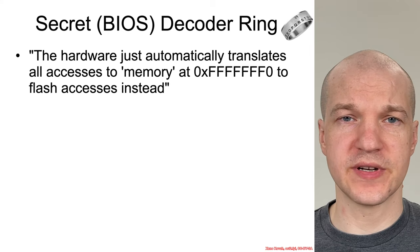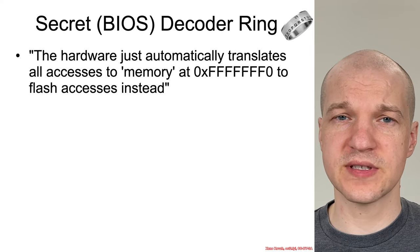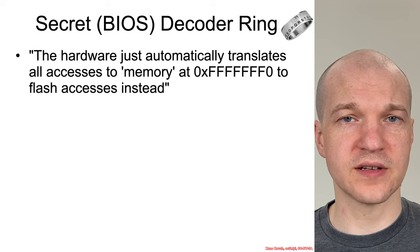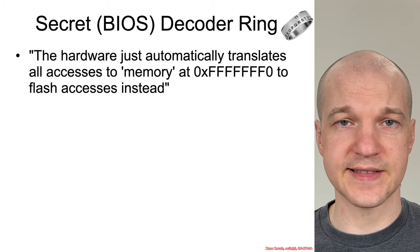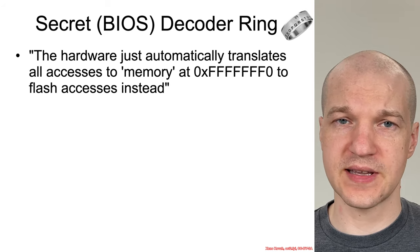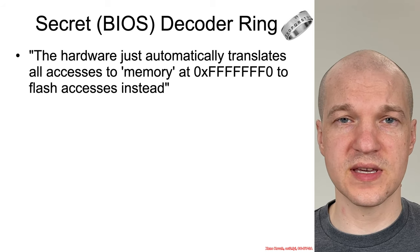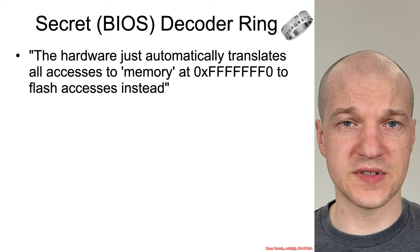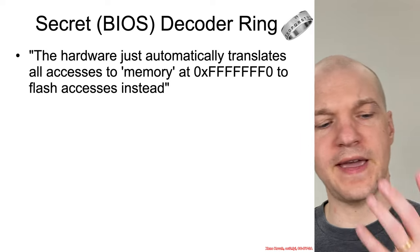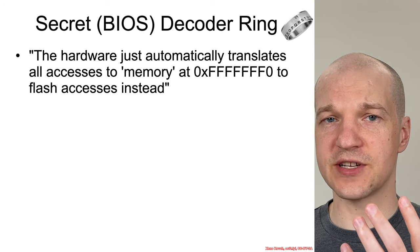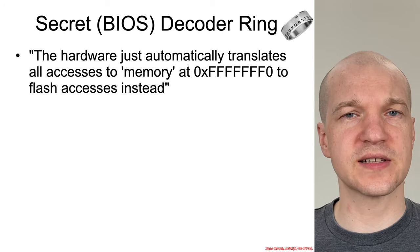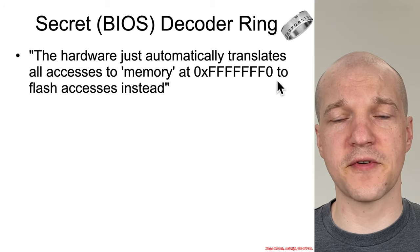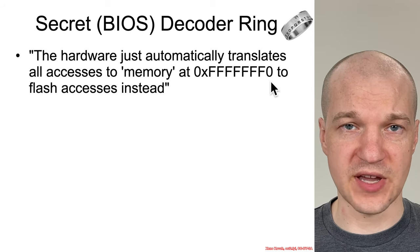At the very beginning of the class, when we were talking about attacker motivation, we said that BIOS lives on a flash chip soldered onto the motherboard. The reset vector is at 0xFFFFFFF0 — 4 gigabytes minus 16 bytes — and the IP is set to that address so it starts executing code from FFFF0. That means the hardware must automatically translate this physical memory address, FFFF0, into access to the SPI flash chip.